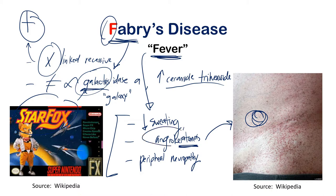To remember the symptoms: decreased sweating because Star Fox is in space and it's cold; peripheral neuropathy because the F in Fabry's stands for fever — when you have a fever you begin to shut down neural processes. For angiokeratomas, you'll just need to remember that one on its own.